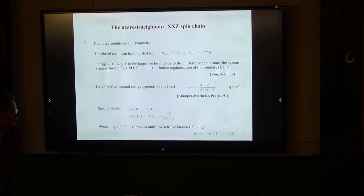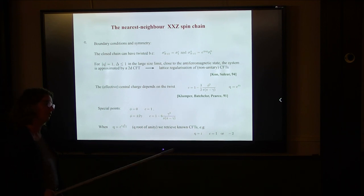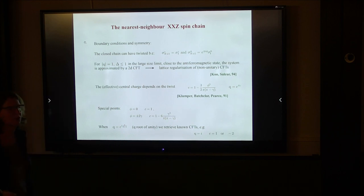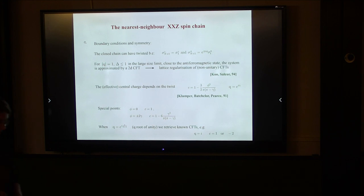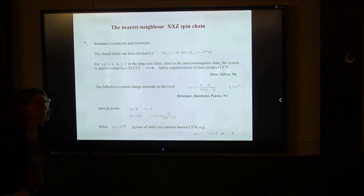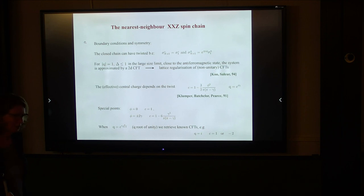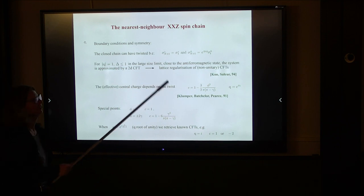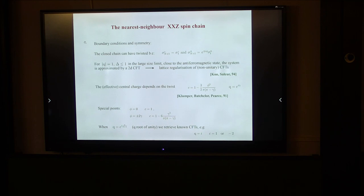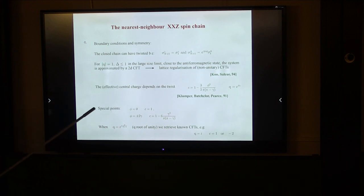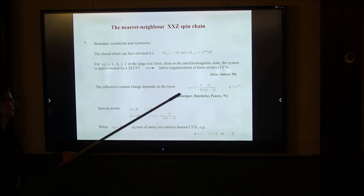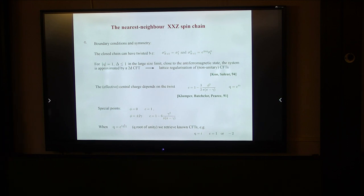The Virasoro generators written in terms of Temperley-Lieb generators were put forward by Koo and Saleur, and more recently this representation was used because these CFTs can be non-unitary depending on boundary conditions. There are subtle characteristics of these non-unitary CFTs, and it is good to have a lattice regularization. What I want to point out is that the central charge depends on the twist, given by a relationship derived by Andreas and collaborators.